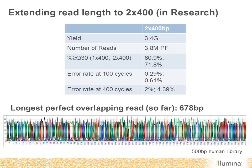The yield in this experiment was 3.4 gigabases of data from 3.8 million clusters — this wasn't a full-scale run, just a subset of tiles on the instrument. We found very high data quality again: on read one, over 80% of the data was greater than or equal to Q30 with the single 400 base read, and over both reads, over 70% of data was greater than Q30. We still have work to do on this protocol and are looking to further improve error rates before delivering this as a product.